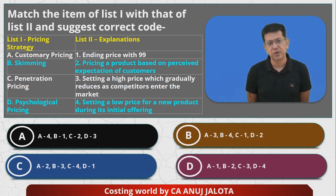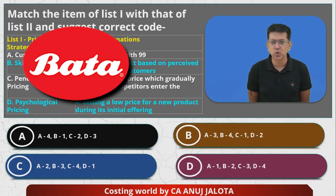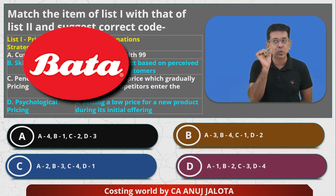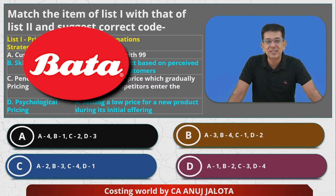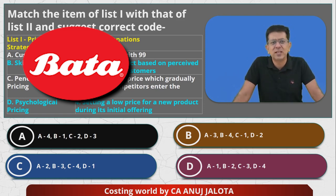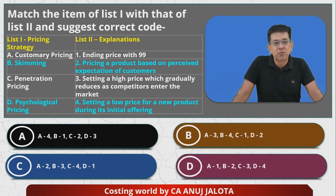Once customers try it and get used to it, if it's a repeat-buy product, after some time I'll start increasing the prices. Penetration means penetrate the market with lower prices, so C matches with 4 — setting a low price for a new product during the initial offering. Psychological pricing in India is also called Bata pricing — Bata shoes were available at ₹299, ₹399. ₹299 is not ₹300, so people think '200 plus something.' That's point 1 — ending with 99. So D matches with 1.